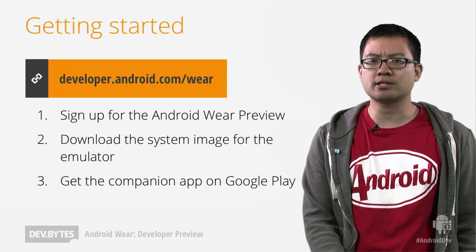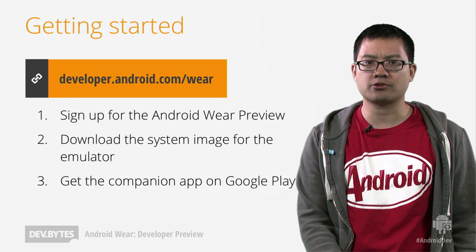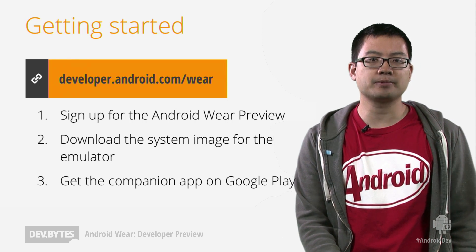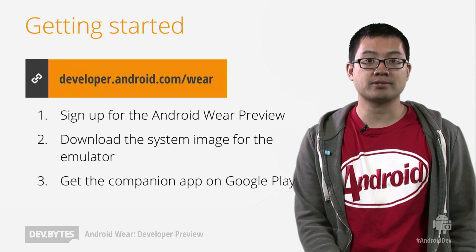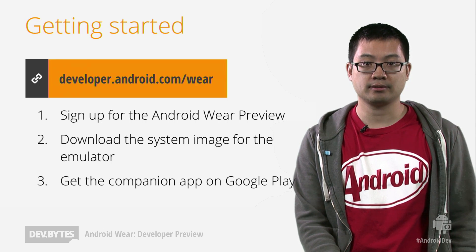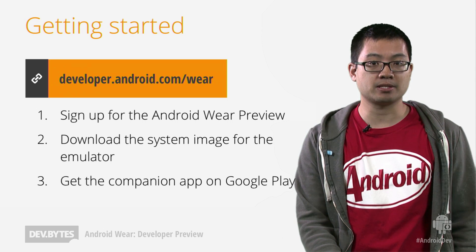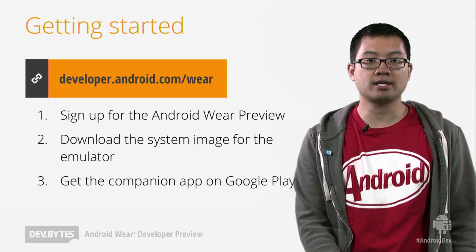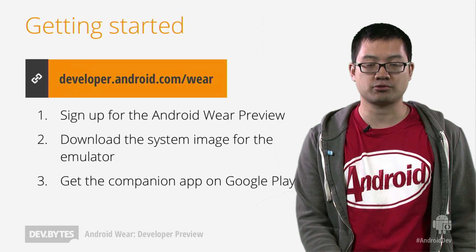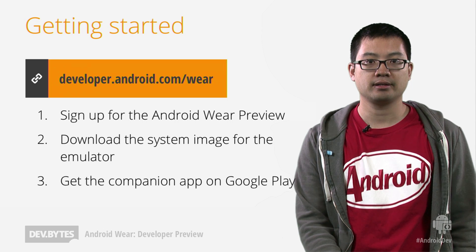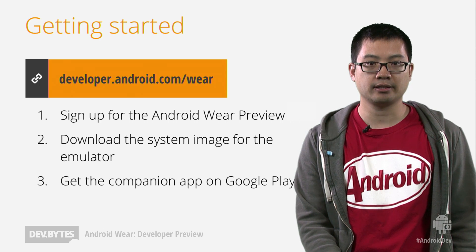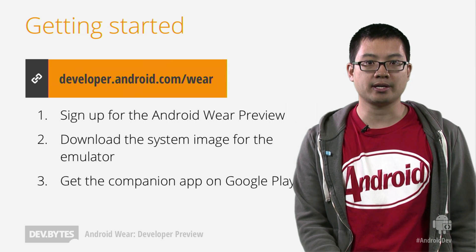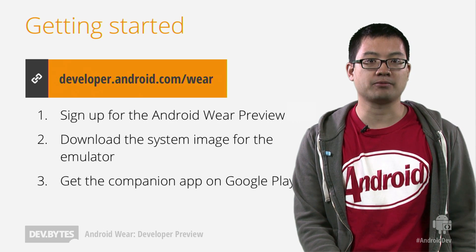So let's talk about how to get started developing for Android Wear. First, go to developer.android.com, where you can sign up for the developer preview and browse the documentation. You should also download the system image from the SDK manager to create an Android virtual device with Android Wear. Finally, install the Android Wear preview app and run it on your Android phone that is connected to your emulator. At this point, you'll have your development environment set up and ready to go.